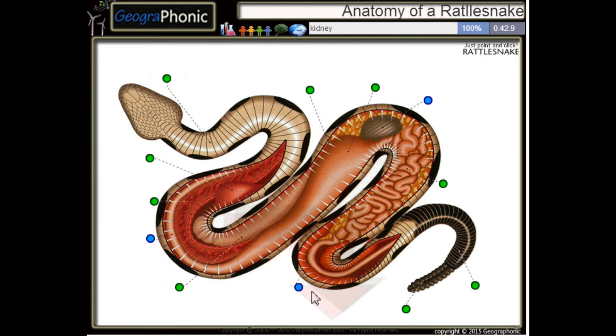This is the kidney of the snake. This is the esophagus. And this is the gallbladder.